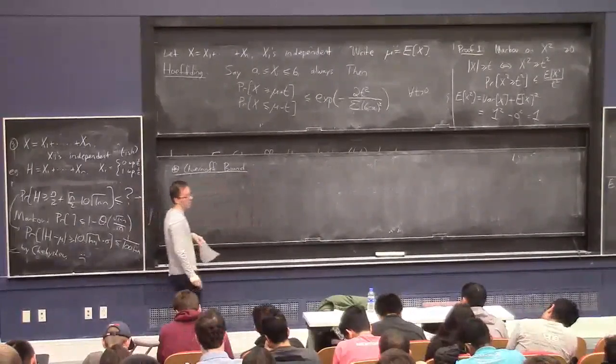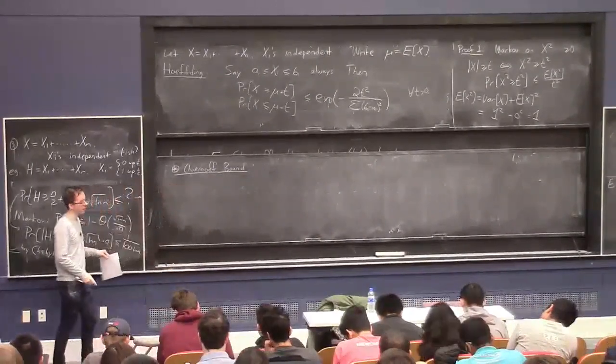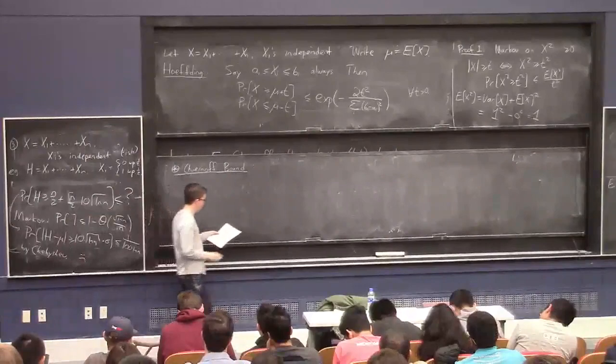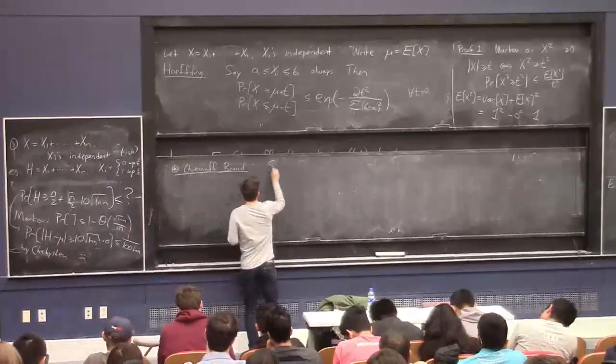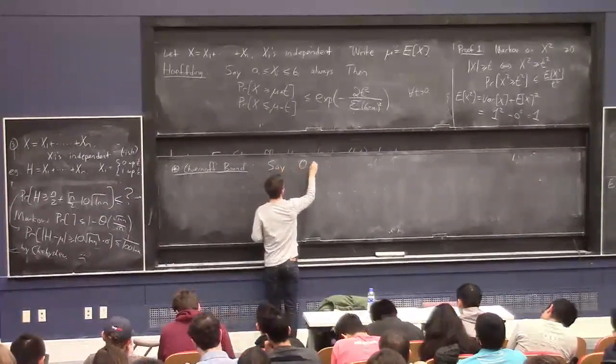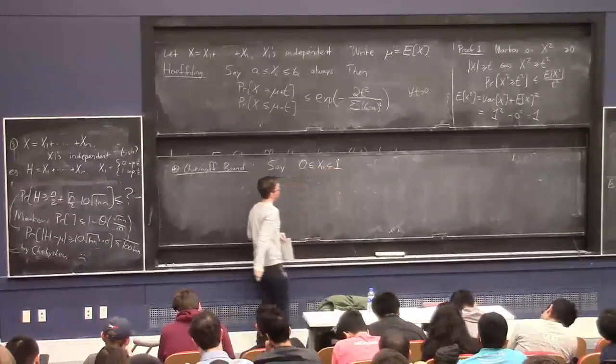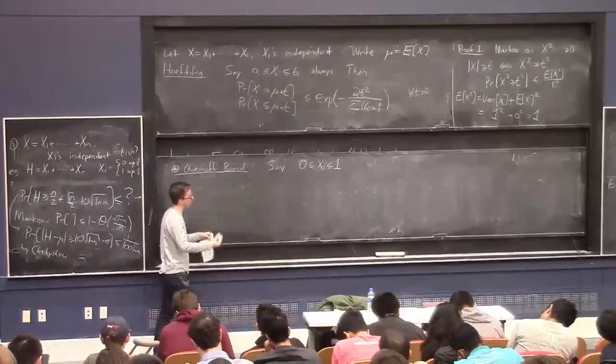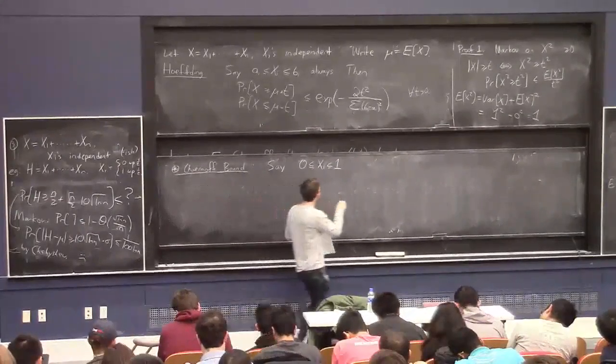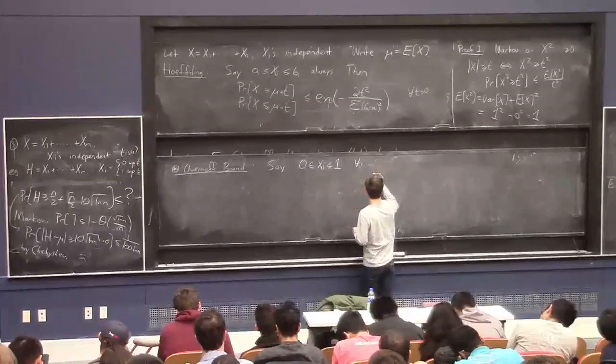Try to memorize it. I mean, people will just, when writing a paper, say, oh, by Chernoff's bound, this. And you just got to get used to that. Get used to using this. So the hypothesis here is that these random variables are between 0 and 1. If you don't have that, you can typically scale your random variables so they have this property.